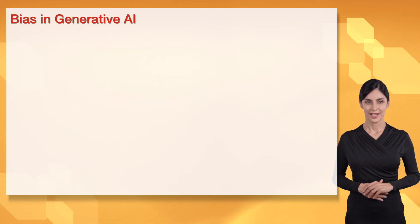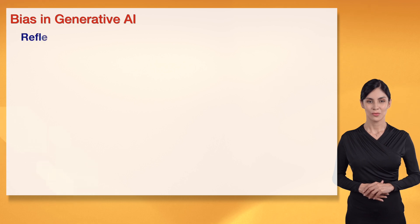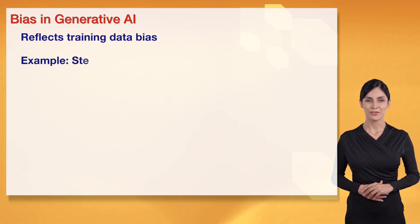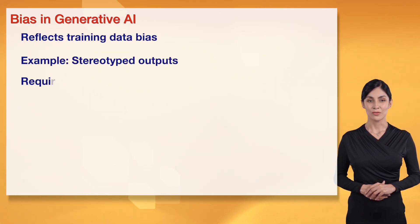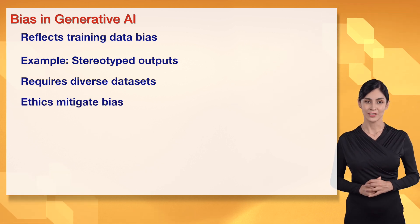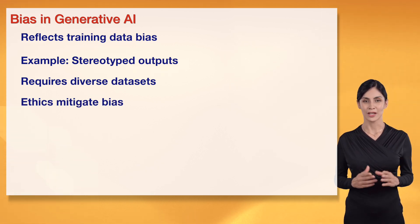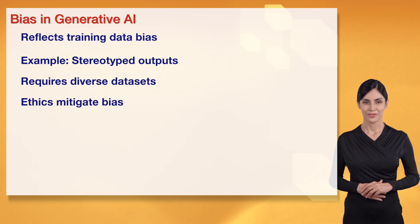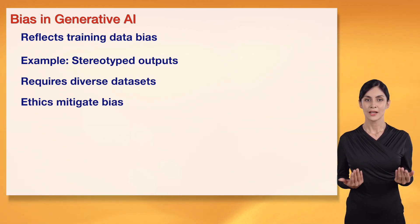Bias in generative AI is serious. It reflects training data bias, like stereotyped outputs, requiring diverse datasets and ethical mitigation. This ensures fair AI art. I'm so ready to solve it. Let's tackle bias. This promotes equity.